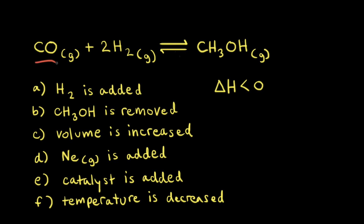Carbon monoxide will react with hydrogen gas to produce methanol. The reaction is at equilibrium, and our job is to figure out which direction the equilibrium will shift — to the left, to the right, or not at all — as we try to make changes to the reaction at equilibrium.